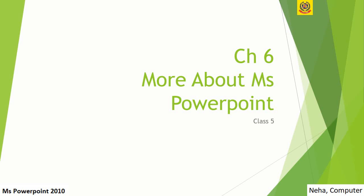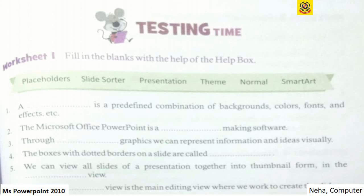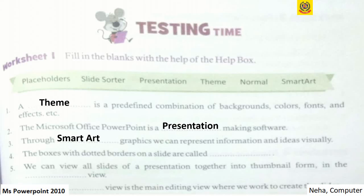Chapter 6: More about MS PowerPoint. Let's do backgrounds, colors, fonts and effects - so it is a theme. Second, Microsoft Office PowerPoint is a presentation making software. Third, through smart art graphics we can represent information and ideas visually. The boxes with dotted borders on a slide are called placeholders. Fifth, we can view all slides together in thumbnail form in the slide sorter view. Sixth, the normal view is the main editing view where we work to create the slide.